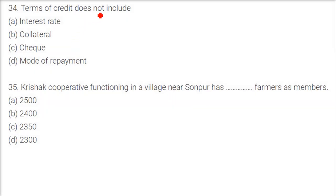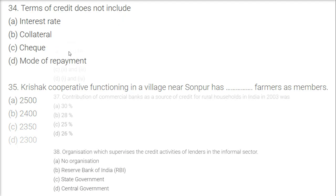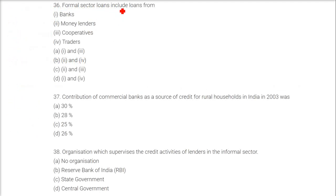Terms of credit does not include cheque. The Krishak property cooperative functioning in a village near Sonpur has 2,300 farmers as members — as given in the textbook. Formal sector loans include loans from banks and cooperatives.